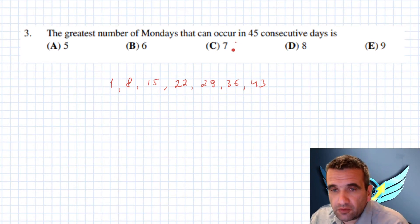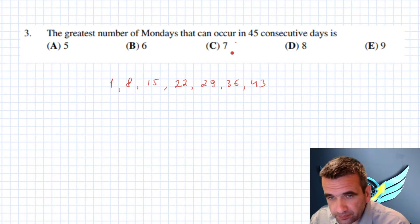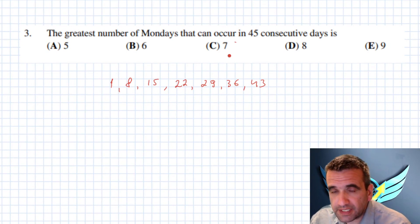And of course if we're going to move Mondays to the next day, right, so if it occurs not on the first day but on the second or third or fourth, the number of Mondays will be less than 7. So maximum Mondays that we can have in 45 consecutive days is 7.